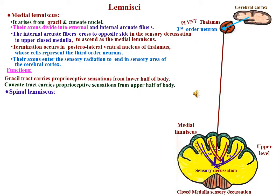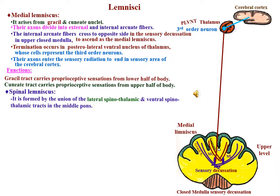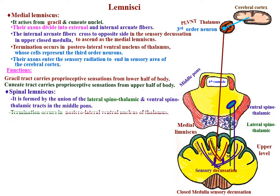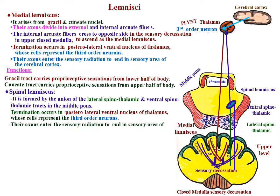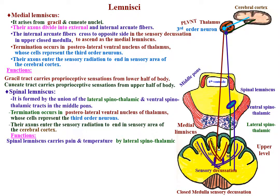Spinal lemniscus. It is formed by the union of the lateral spinothalamic tract and the ventral spinothalamic tract in the middle part of the pons. Termination occurs in the posterior lateral ventral nucleus of the thalamus, which is the third-order neuron. The axons of the cells of the posterior lateral ventral nucleus of the thalamus enter the sensory radiation to end in the sensory area of the cerebral cortex. The spinal lemniscus carries pain and temperature sensations by the lateral spinothalamic tract, and simple or light touch by the ventral spinothalamic tract.